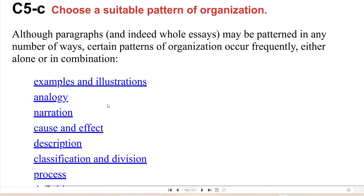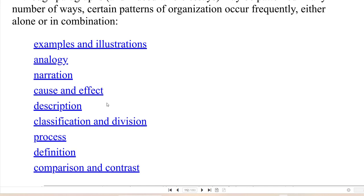Although paragraphs — and indeed whole essays — may be patterned in any number of ways, certain patterns of organization occur frequently, either alone or in combination. You have many different kinds of paragraphs: examples and illustrations, analogy, narration, cause and effect, description, classification, process, definition, and comparison-contrast paragraphs. These are all the same kinds of patterns of organization that you have for essays, and they are sometimes called methods of development, with different uses depending on the writer's subject and purpose.